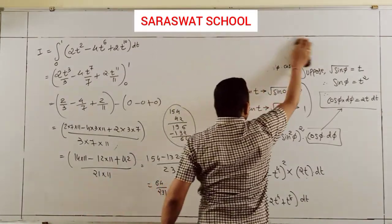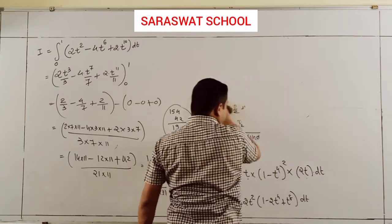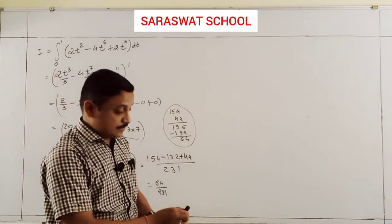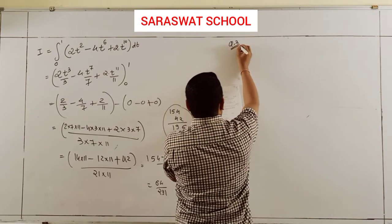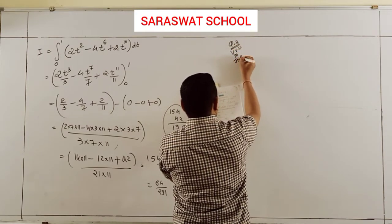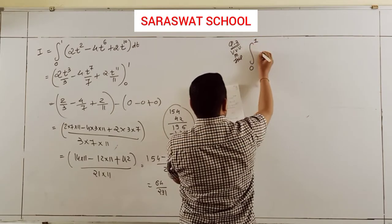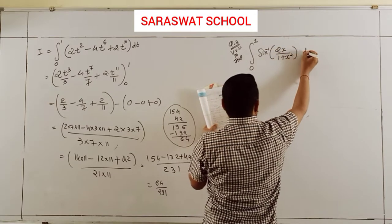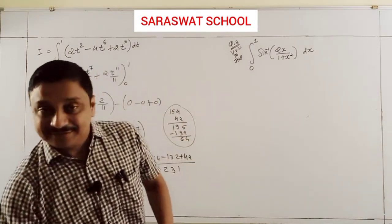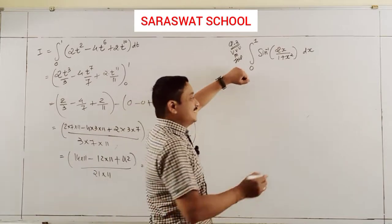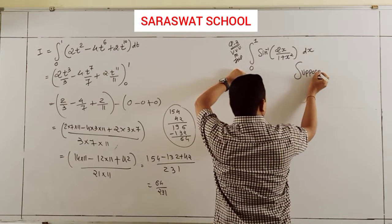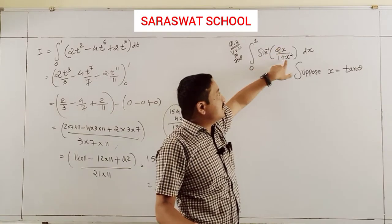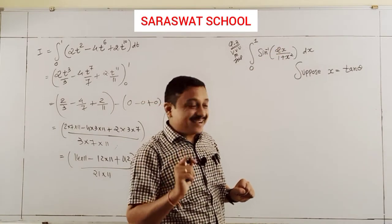Third one — very very most important, a board question. Integrate from 0 to 1: sin⁻¹(2x/(1+x²)) dx. This type of numerical I already explained in indefinite integrations. Suppose x equals tanθ, because 2tanθ/(1+tan²θ) equals sin2θ.